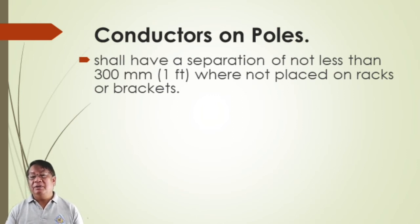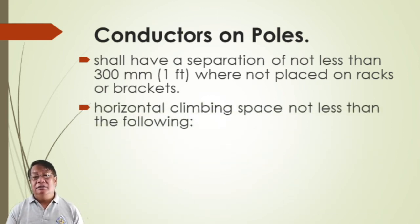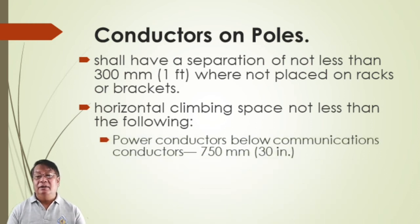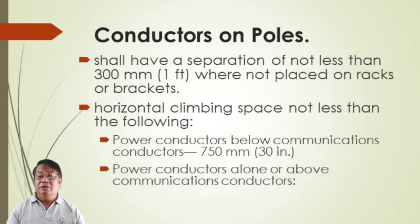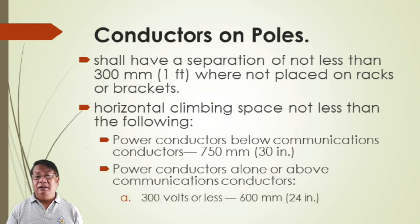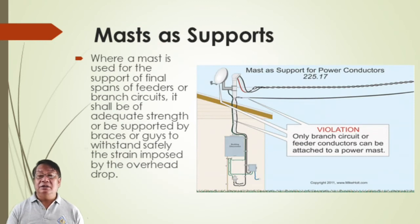For horizontal climbing spaces, power conductors below communication conductors shall be at least 750 mm so that they will not affect the communication channel. Power conductors above communication conductors at 300 volts or less require 300 mm separation; over 300 volts, 750 mm separation.